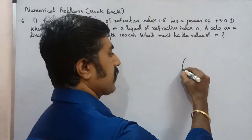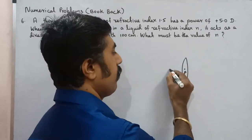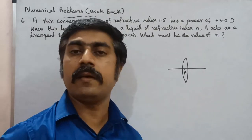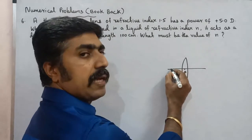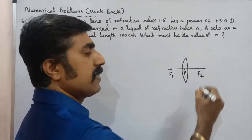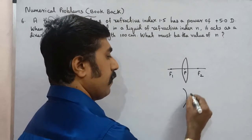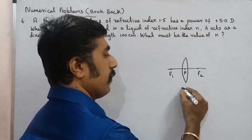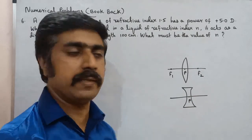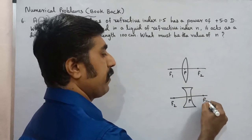A converging lens is a convex lens. This is the pole or optical center. The imaginary straight line passing through the pole is the principal axis. For a convex lens, the principal focus is on the left side and the secondary focus is on the right side. The lens has two spherical surfaces and therefore two focal points.